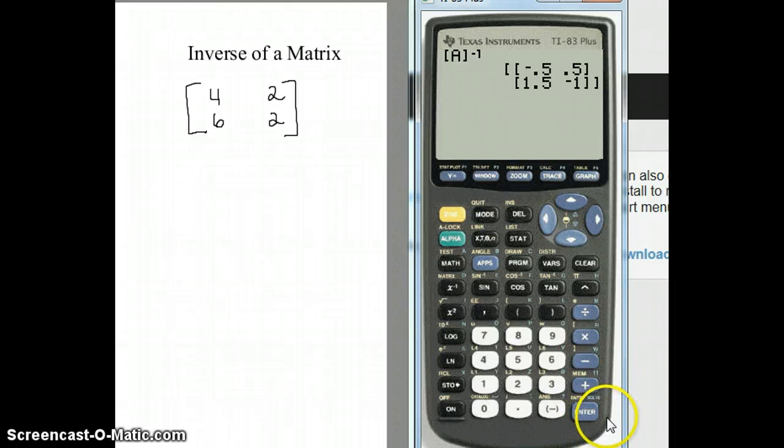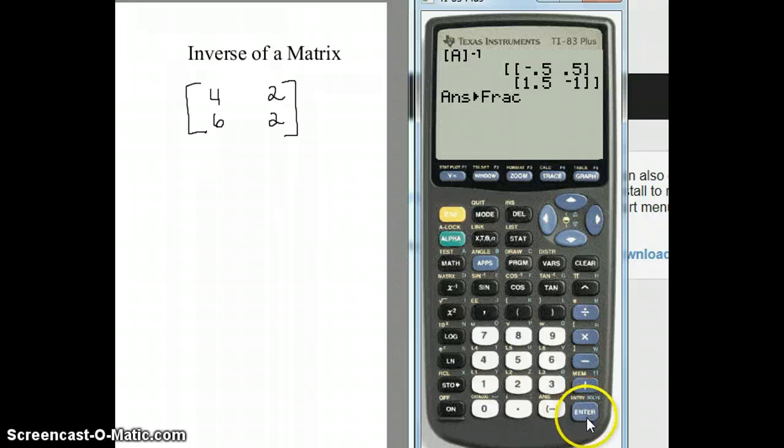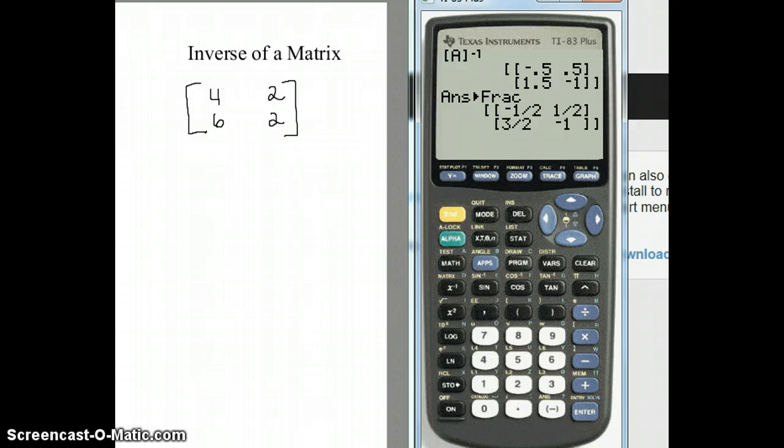Now if you want it listed as fractions, it works the same as any other time we want to change decimals to a fraction. We hit math and enter on fraction and hit enter again, and it will give you a matrix in fraction form.